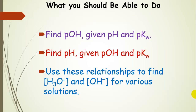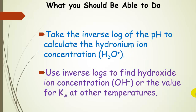After this discussion, you should be able to find pOH given pH and pKW, and find pH given pOH and pKW. You should also use these relationships to find hydronium and hydroxide ion concentrations for various solutions — taking the inverse log of pH for hydronium, or using KW if you have pH. Practice with all of these relationships to make sure you can navigate between them.